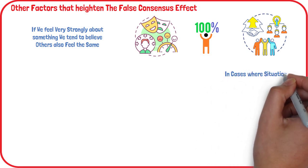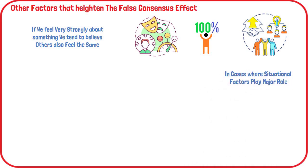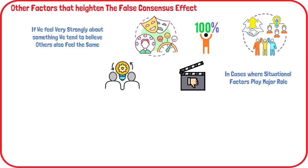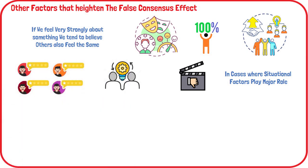Finally, we are more likely to experience the false consensus effect in cases where situational factors play a major role. For example, if you think the movie is terrible because of the poor sound quality and assume that everyone else viewing the movie is having the similar experience and forming the same opinions, you might mistakenly believe all other viewers will agree the movie is terrible.